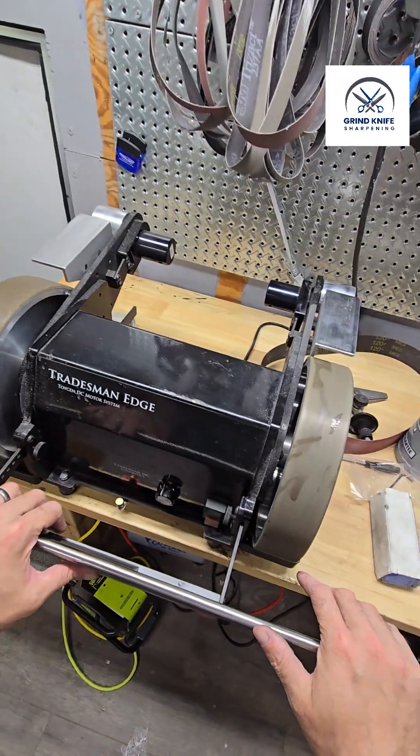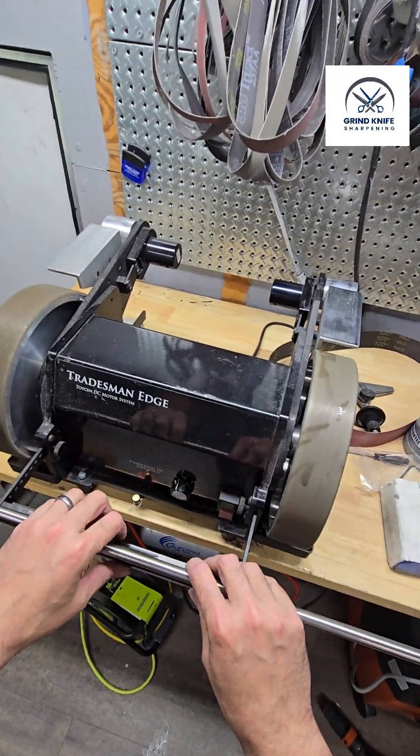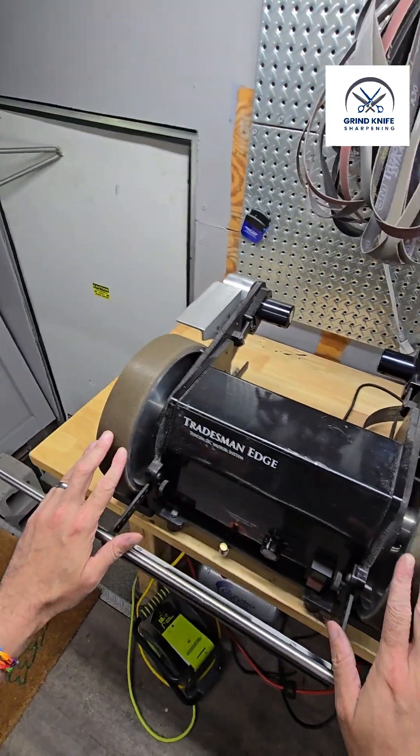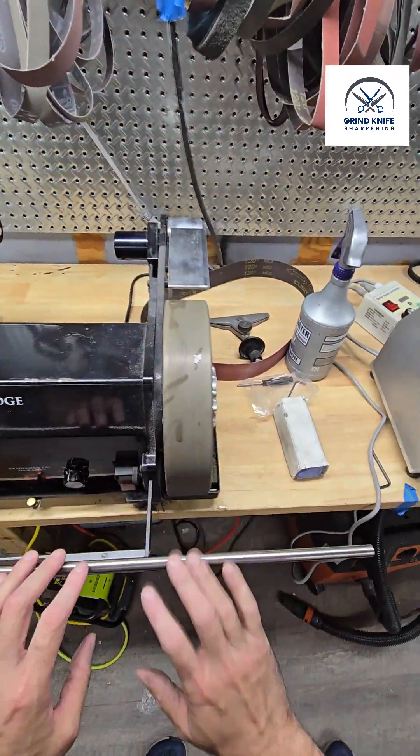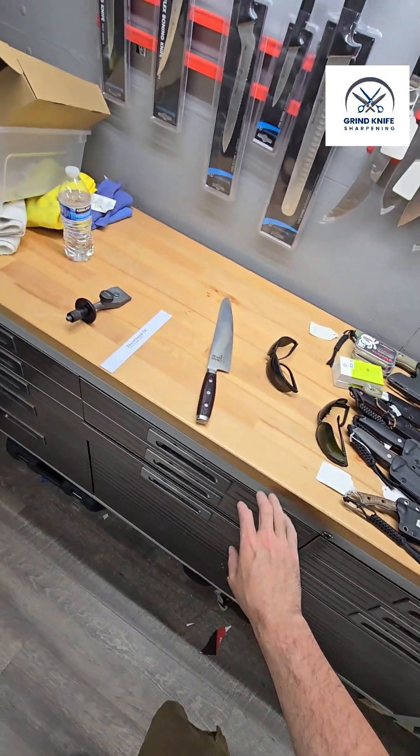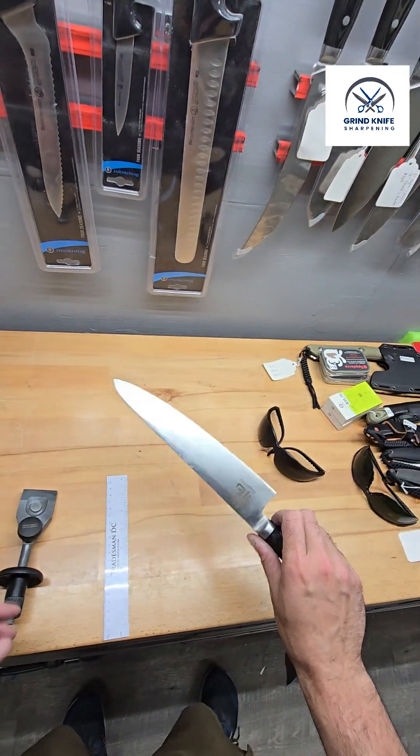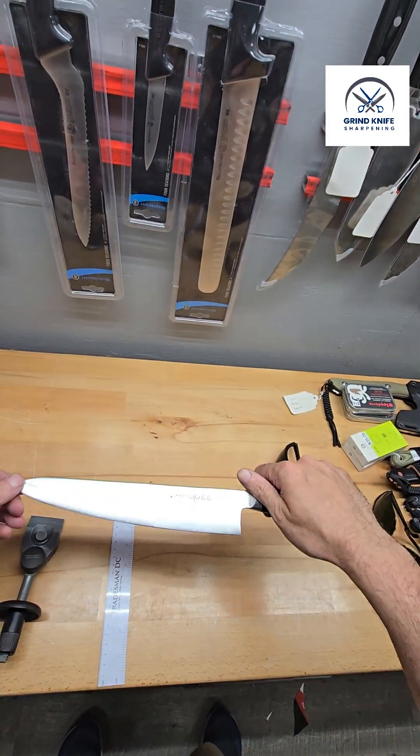And so we're going to proceed with jigging up a knife. Definitely designed to be a fixture sharpener. I know there's folks out there using it freehand. That's fine if that's what you want to do, but we're going to go over some fixture sharpening. I'm going to use this Dragonfire Gyuto that I have.